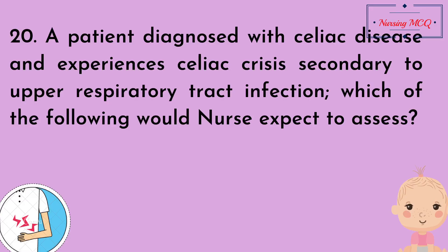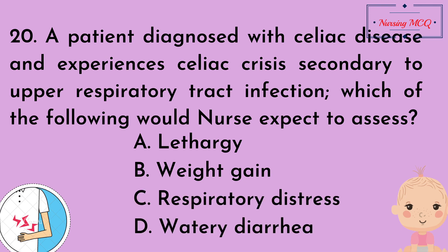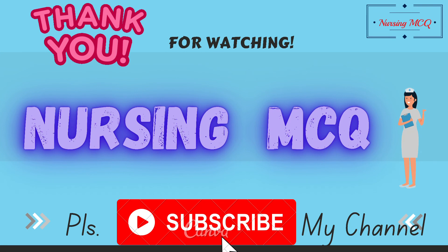Question number 20. A patient diagnosed with celiac disease experienced a celiac crisis secondary to an upper respiratory tract infection. Which of the following would the nurse expect to assess? Option A, lethargy; Option B, weight gain; Option C, respiratory distress; Option D, watery diarrhea. The right answer is Option D: watery diarrhea. Thanks for watching, please subscribe to our channel, Nursing MCQ.